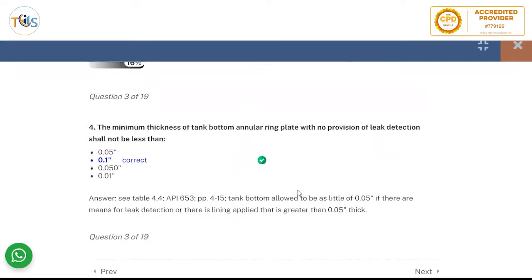Minimum thickness of tank bottom annular ring plate, which is the most critical part of the bottom of the storage tank, with no provision of leak detection shall not be less than 0.1 inch. If you have a lining that is thicker than 0.05 inch, then the minimum could be reduced to 0.05 inch.